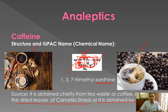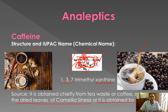The whole xanthine structure has three methyl groups attached at positions 1, 3, and 7. The numbering starts from position 1 through 9. The methyl groups are at positions 1, 3, and 7, which is why caffeine is named 1,3,7-trimethylxanthine.